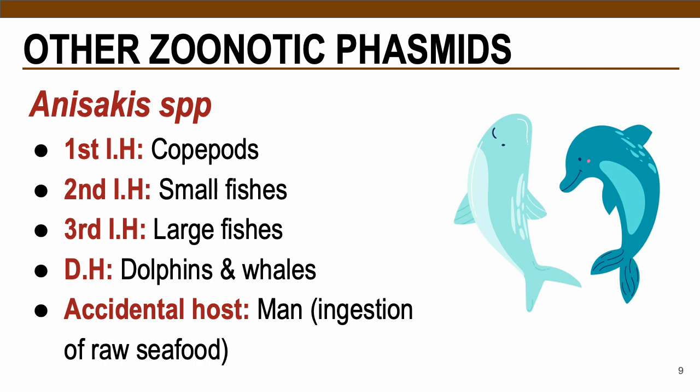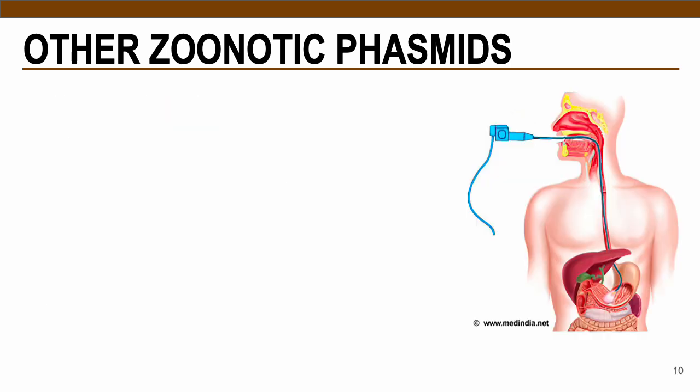For copepods, since these are the first intermediate hosts, ingestion or drinking of contaminated water may also infect humans. Consumption of raw seafood is also a mode of transmission for this parasite.